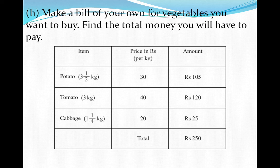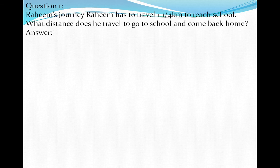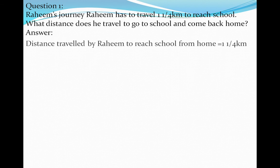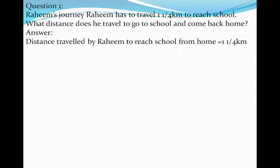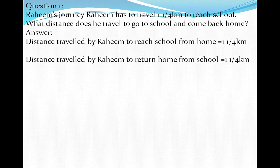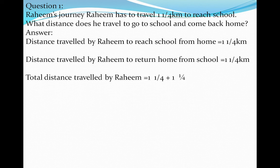I hope you have done all this. Now we will move forward for our next activity. The next activity and question is related to Rahim's journey. Rahim has to travel 1 and 1/4 km to reach school. What distance has he travelled to go to school and come back home? The distance travelled by Rahim to return home from school is also equal to 1 and 1/4 km. So the total distance travelled by Rahim is equal to 1 and 1/4 km plus 1 and 1/4 km.